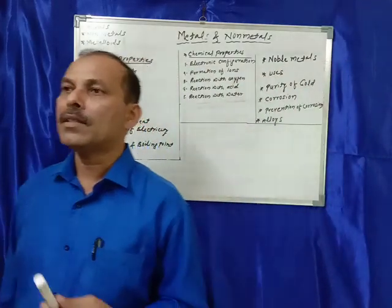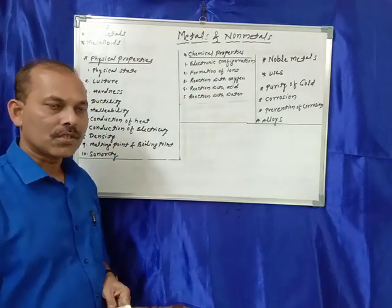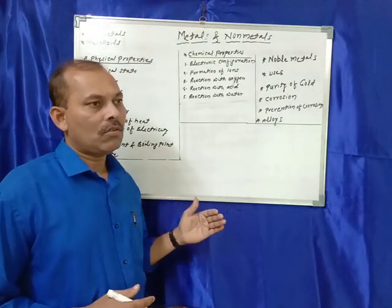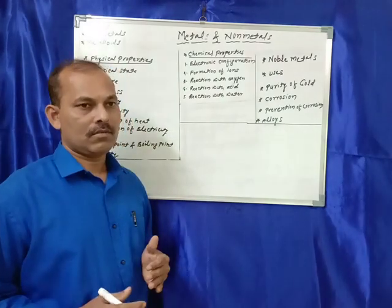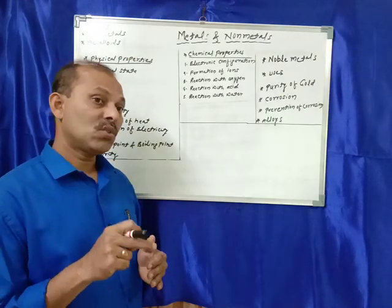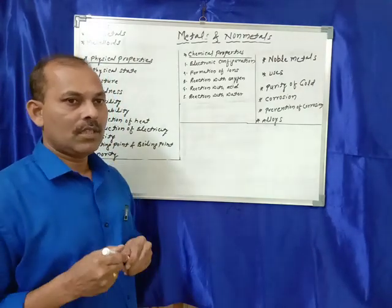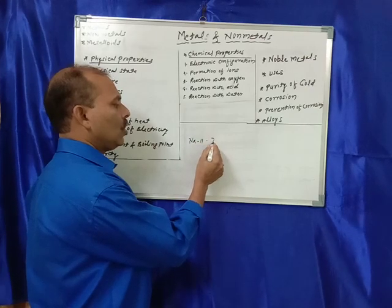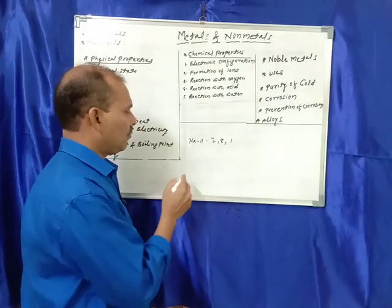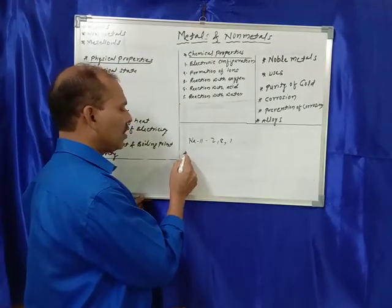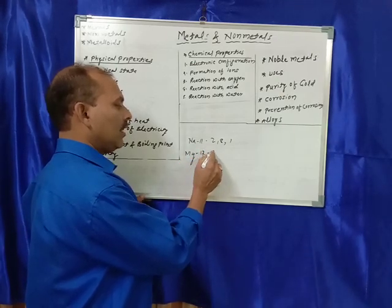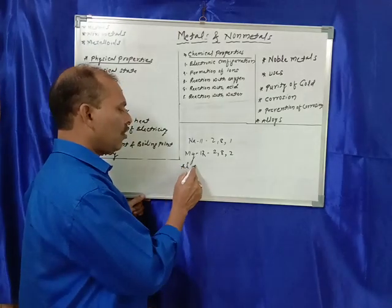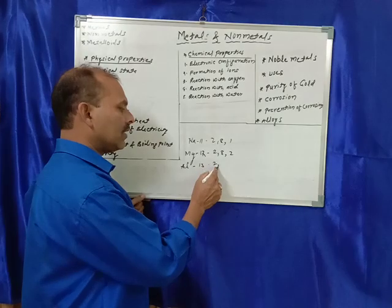Now we will see the chemical properties of metals and non-metals. First, electronic configuration — we arrange the electrons in different shells of the atom. For example, the electronic configuration of sodium with atomic number 11 is 2, 8, 1. Magnesium with atomic number 12 has configuration 2, 8, 2. Aluminium with atomic number 13 has configuration 2, 8, 3.